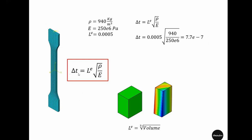To understand this, we first look at the minimum stable time increment. For a given mesh size and material, it is given by this formula, where LE is the characteristic length of the element, rho is the density, and E is the Young's modulus of the material.